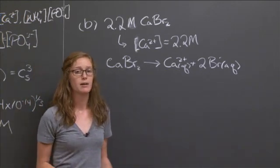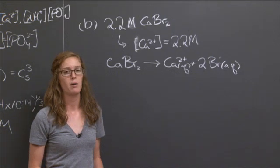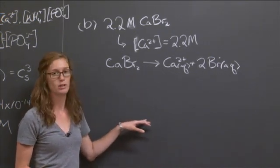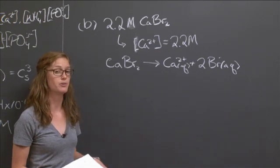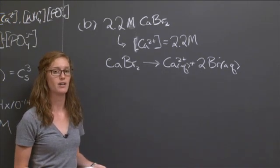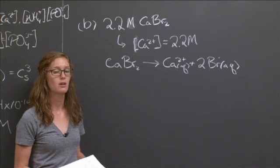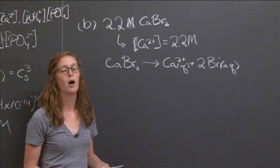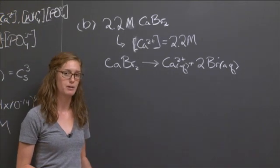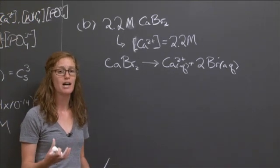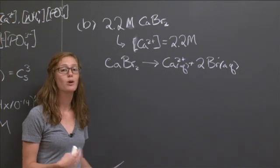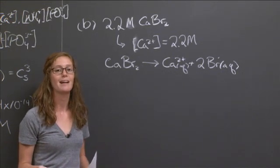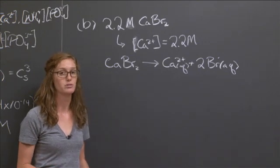So before we start plugging in any numbers, we should think about this problem. Do we think that already having calcium in the system will increase or decrease the solubility of the calcium ammonium phosphate? Hopefully, we can agree that it would probably decrease the solubility because you already have those calcium ions. So putting more calcium ions into the water is going to be harder. And therefore, less calcium ammonium phosphate will dissolve.